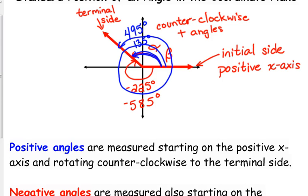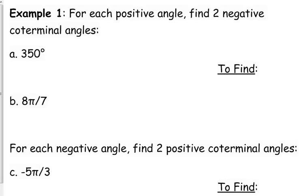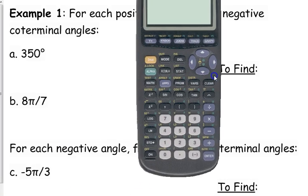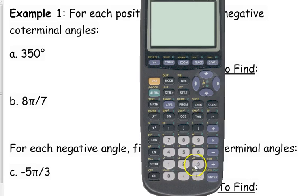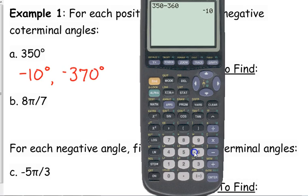Those are coterminal angles. So, let's look at finding coterminal angles here. Our first one is 350 degrees. We want to find two negative coterminal angles for that. So, all we have to do is subtract 360 degrees. The first negative coterminal angle would be negative 10 degrees. If we subtract 360 again, meaning we go, we rotate around another full rotation, then negative 370 degrees is another negative coterminal angle.